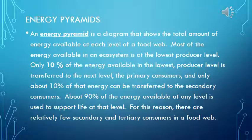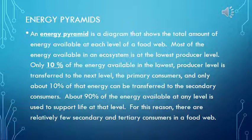Energy Pyramids: An energy pyramid is a diagram that shows the total amount of energy available at each level of a food web. Most of the energy in an ecosystem is at the lowest producer level. Only 10% of the energy at the producer level is transferred to the primary consumers, and only about 10% of that energy can be transferred to the secondary consumers.